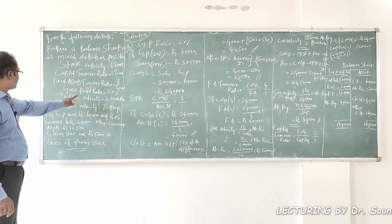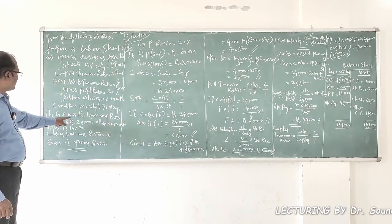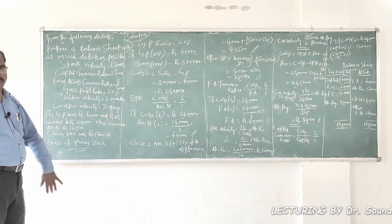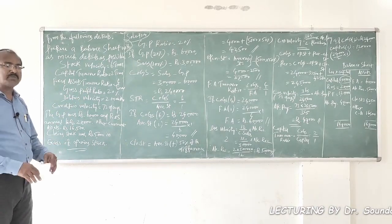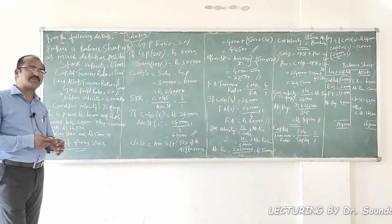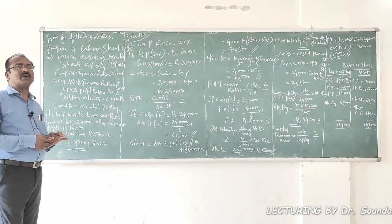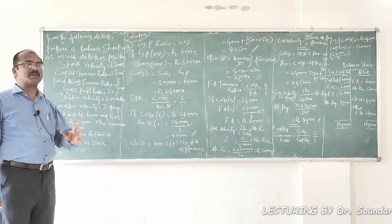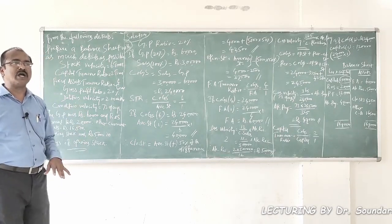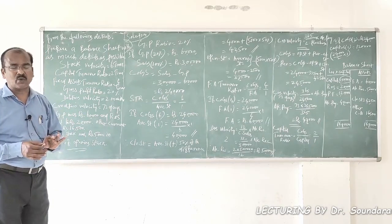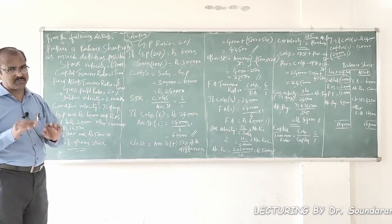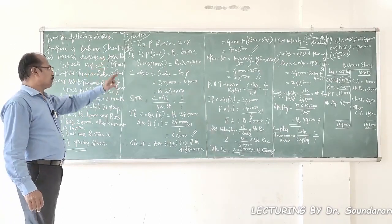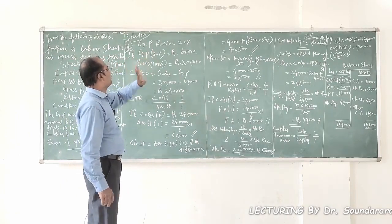It is good that we start with the gross profit ratio because we are given the GP ratio and the gross profit amount. If you know the gross profit amount you can calculate sales, and if you know the sales value you can find out the cost of goods sold. This is the plan. Let's start — gross profit ratio is equal to 20%.